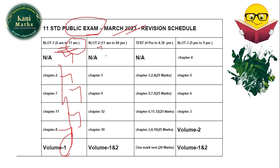Then, slot 2: you can choose Chapter 1, Chapter 9, Chapter 12, Chapter 10. These are two different slots. You can schedule these for the 14th. This covers the entire chapter.